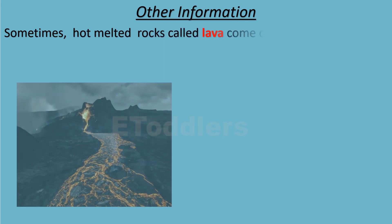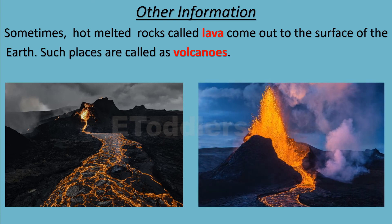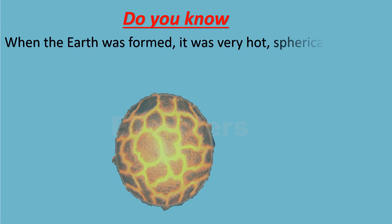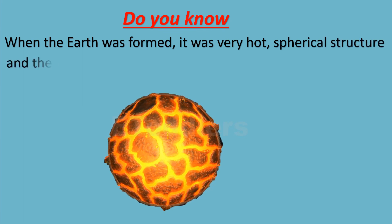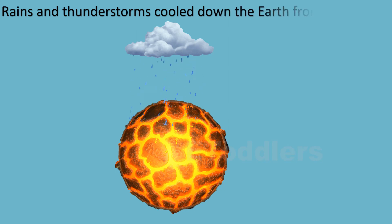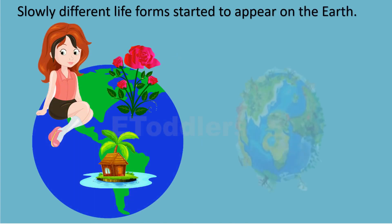Sometimes hot melted rocks called lava come out to the surface of the earth — such places are called volcanoes. When the earth was formed, it was a very hot spherical structure and there was no life on it. Rains and thunderstorms cooled down the earth from outside, and slowly different life forms started to appear.